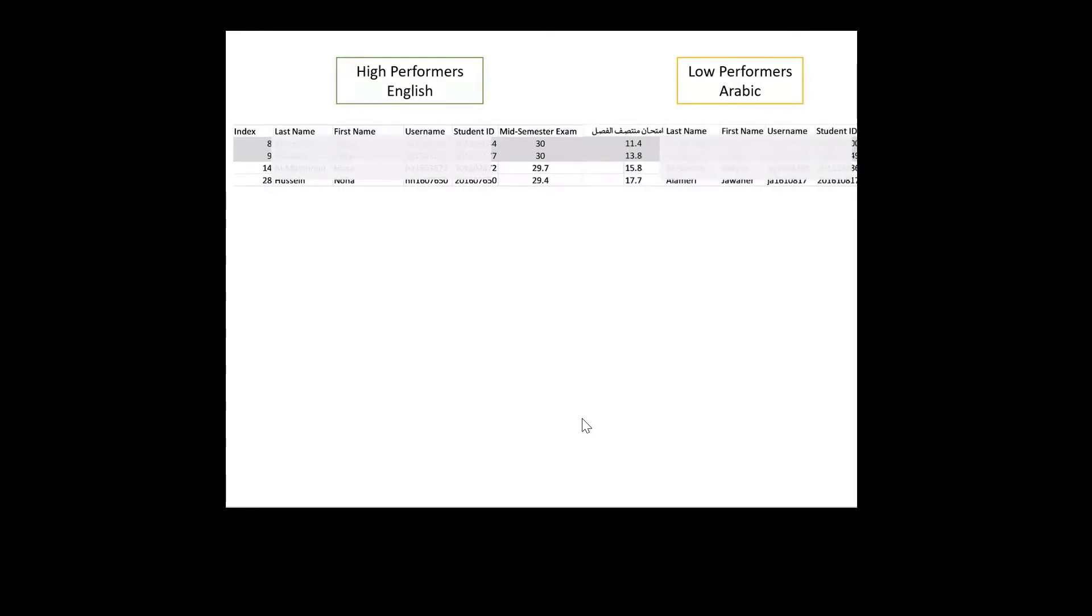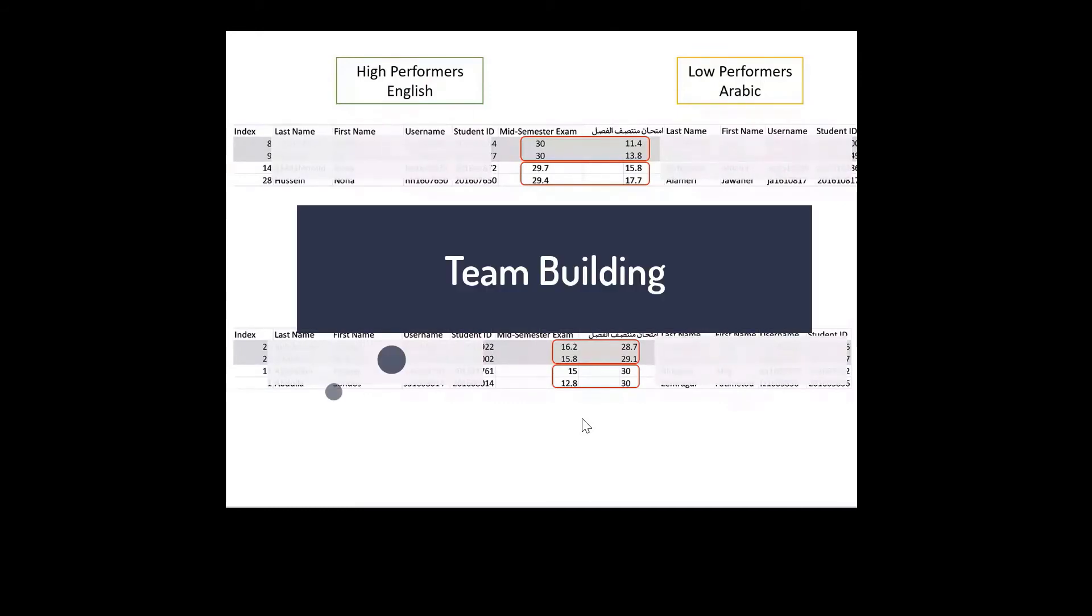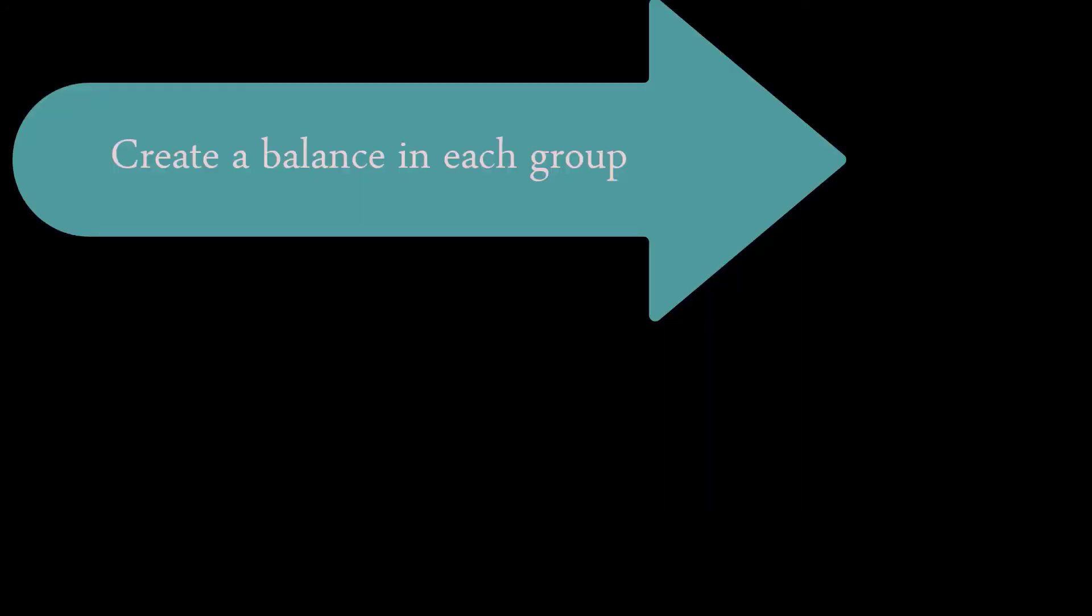I placed the two rank lists next to each other. Starting from the top, I paired up two high-performing students from the English track with two high-performing students from the Arabic track. That's how I formed the first of the 16 groups. As I went down the list, the groups started to contain two high-performing students from the Arabic track with two low-performing students from the English track. This team structuring mimicked real-life team building. The purpose was to create a balance in each group.